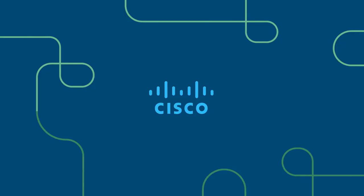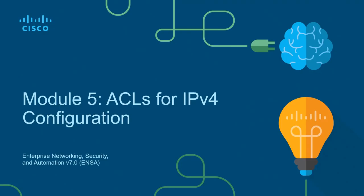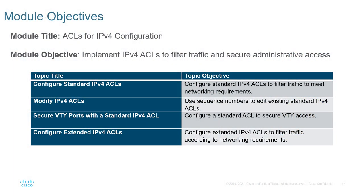Welcome. This is the Cisco CCNA ENSA, also known as the Enterprise Networking Security and Automation course. This course focuses on the CCNA version 7 curriculum. This is course 3 of 3, Module 5: ACLs for IPv4 Configuration. We're going to be talking about configuring a standard ACL and an extended ACL, how to modify our ACLs, and how to secure our line console and VTY ports with a standard ACL.